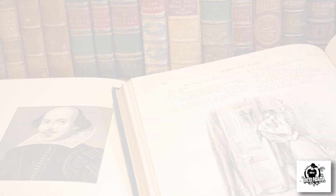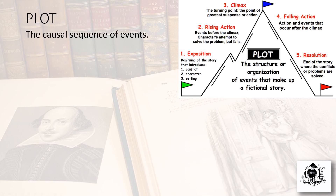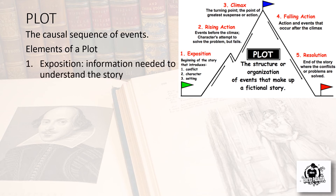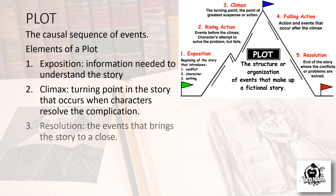The next element is plot, which refers to the sequence of events. There are five points in the plot — exposition, rising action, climax, falling action, and resolution — but three main ones: beginning (exposition), climax, and resolution. Exposition is the information needed to understand the story. The climax is the turning point when characters resolve the complication. The resolution is the events that bring the story to a close.